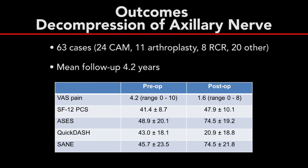Following axillary nerve decompression, there was an overall improvement for all patient-reported outcome scores. This population consisted of 63 patients with an average follow-up of 4.2 years. Notably, the vast majority of these patients underwent nerve release in conjunction with comprehensive arthroscopic management of glenohumeral osteoarthritis, and these outcome scores reflect this associated pathology.